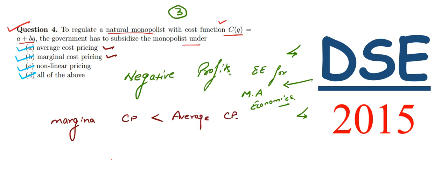According to this statement, we can say that if a subsidy is done under marginal cost pricing, then that will give us negative profit. Because since marginal cost is less than average cost pricing, if we subsidize the monopolist under average cost pricing we won't get negative profits.